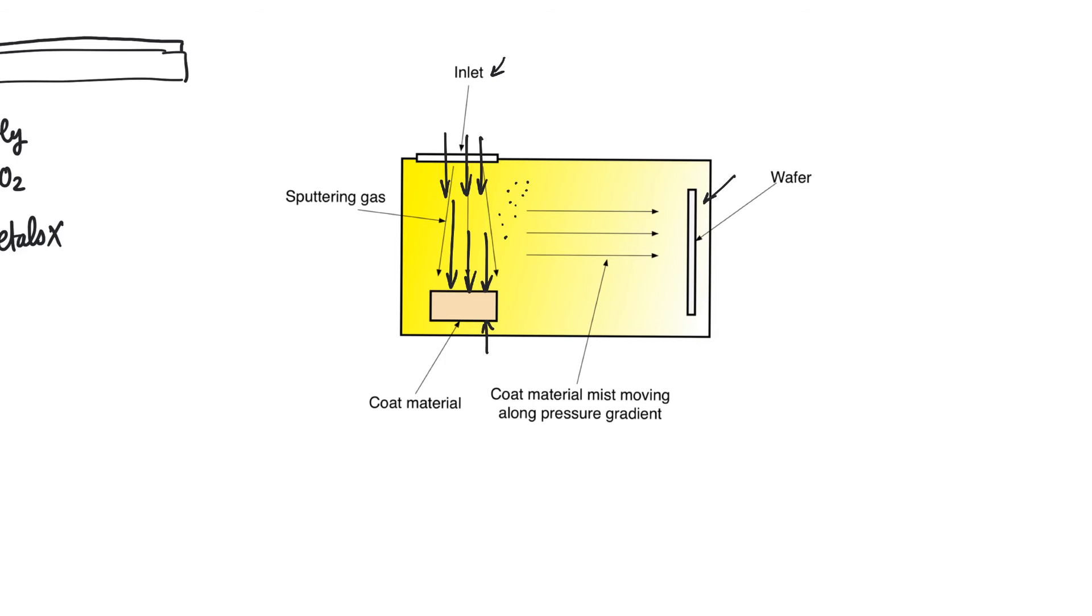We create a pressure gradient in the room so that the pressure is higher on the end containing the coat material than the pressure at the end containing the wafer. This causes the coat material to diffuse from the left to the right. When it diffuses from the left to the right, it will meet the wafer where it will form a film on top of the wafer. This whole process just depends on forming an aerosol and then directing it so that it forms a coat.